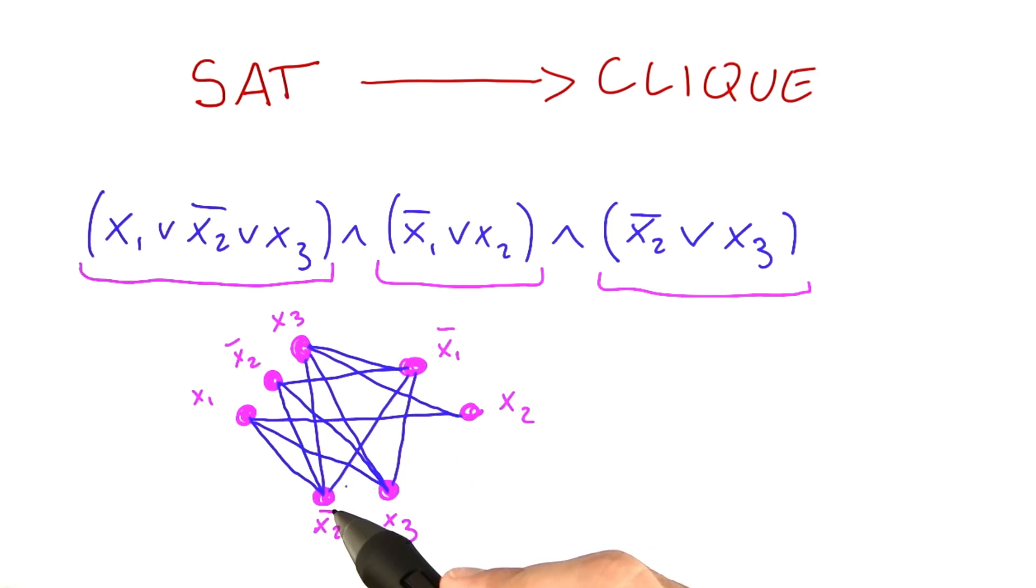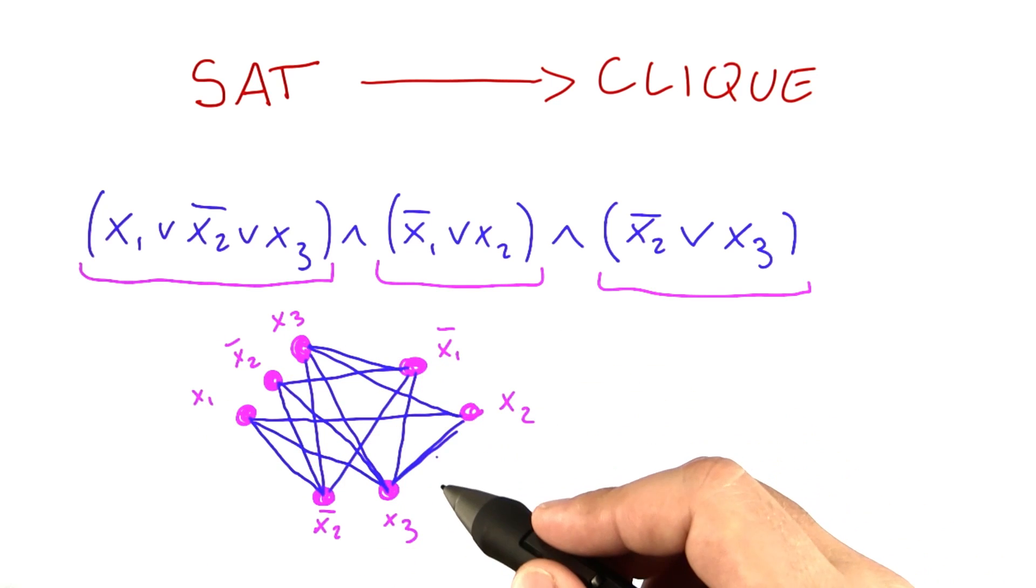So x2, we are not drawing an edge to this not x2 here. And we're drawing an edge down here. And we've already drawn all the edges down here. So this is the network that we construct.